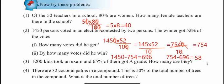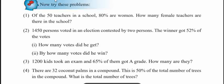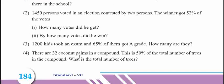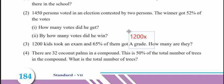Next question: 1200 kids took an exam and 65% of them got A grade. How many got A grade? We calculate 1200 × 65 by 100.